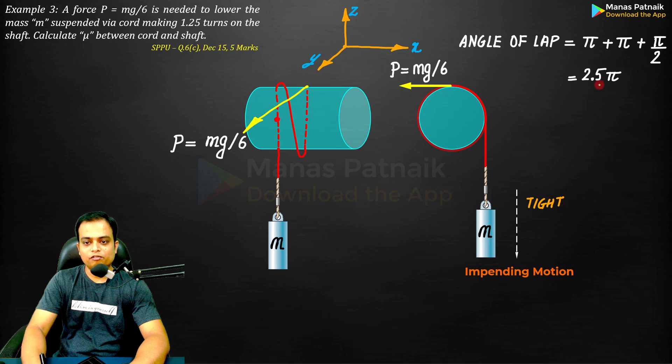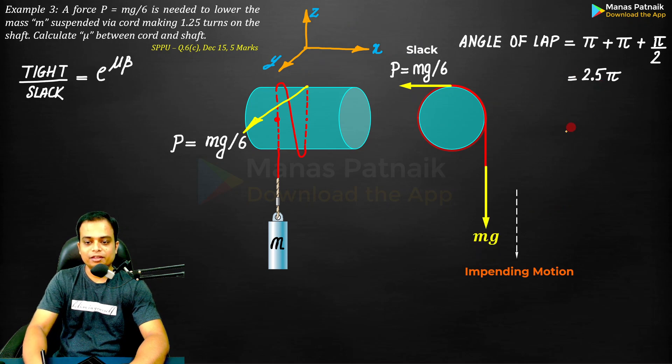And over here you are going to have the slacker side. By the way, the total angle of lap over here is 2.5π. Slack side and that's the tight side.